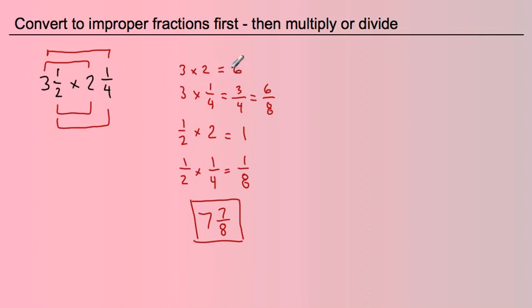Going through all this and knowing what to do and doing a lot of this work in your head and going fast and keeping it organized, that's going to be very difficult. Fortunately, mathematicians have found a much better way to do this, and it starts with converting each one of these to an improper fraction.